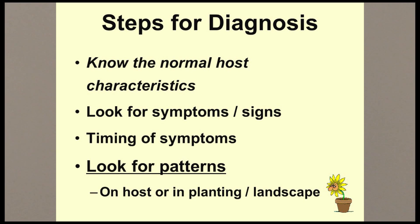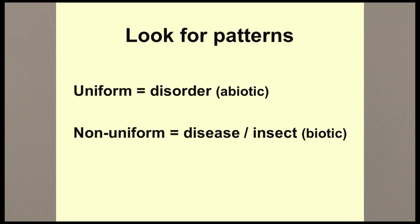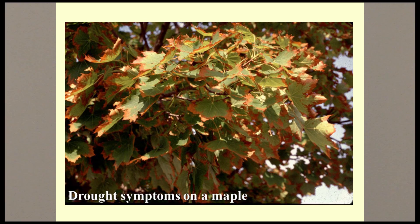The next key step in diagnosing plant problems is looking for any pattern to the symptoms. In general, if there's a uniform pattern to the symptoms, the problem is most likely a disorder caused by non-living factors — late spring frost and drought are two examples. If the pattern is not uniform, not the same on every leaf or plant, the problem is most likely due to a disease or insect. In this photo, every maple leaf has nearly the same degree of browning along the margin of the leaf. This is a typical symptom associated with drought or sometimes with high salt content in the soil. Pathogens would not produce symptoms this uniform.